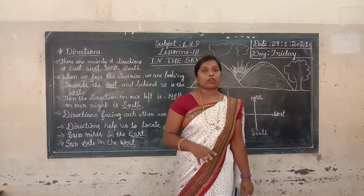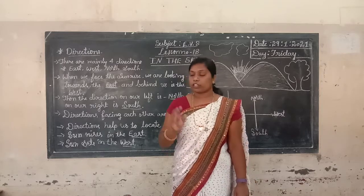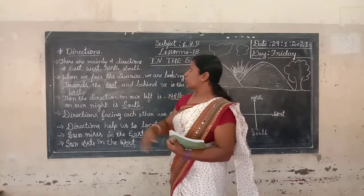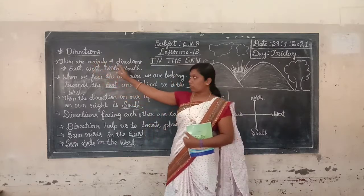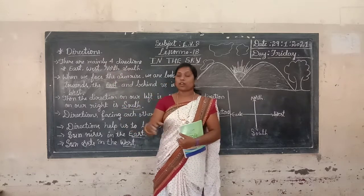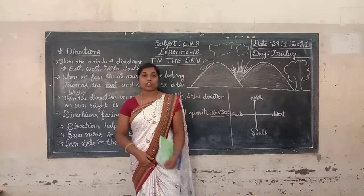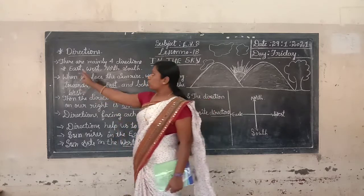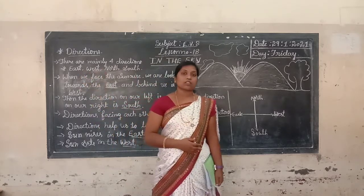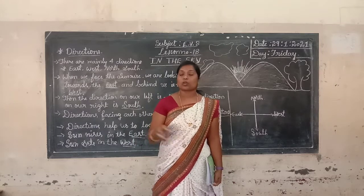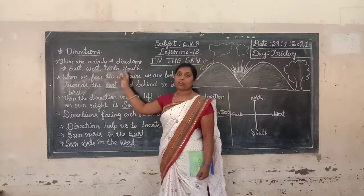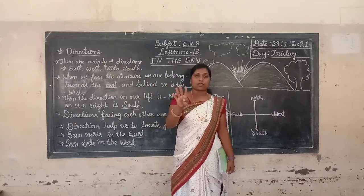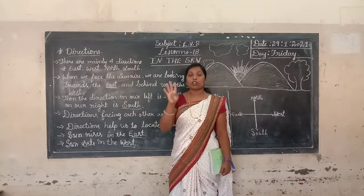Today we are going to learn about directions. There are four directions. Do you know which the four directions are? They are east, west, north and south. So mainly there are four directions, and we divide into these four directions.